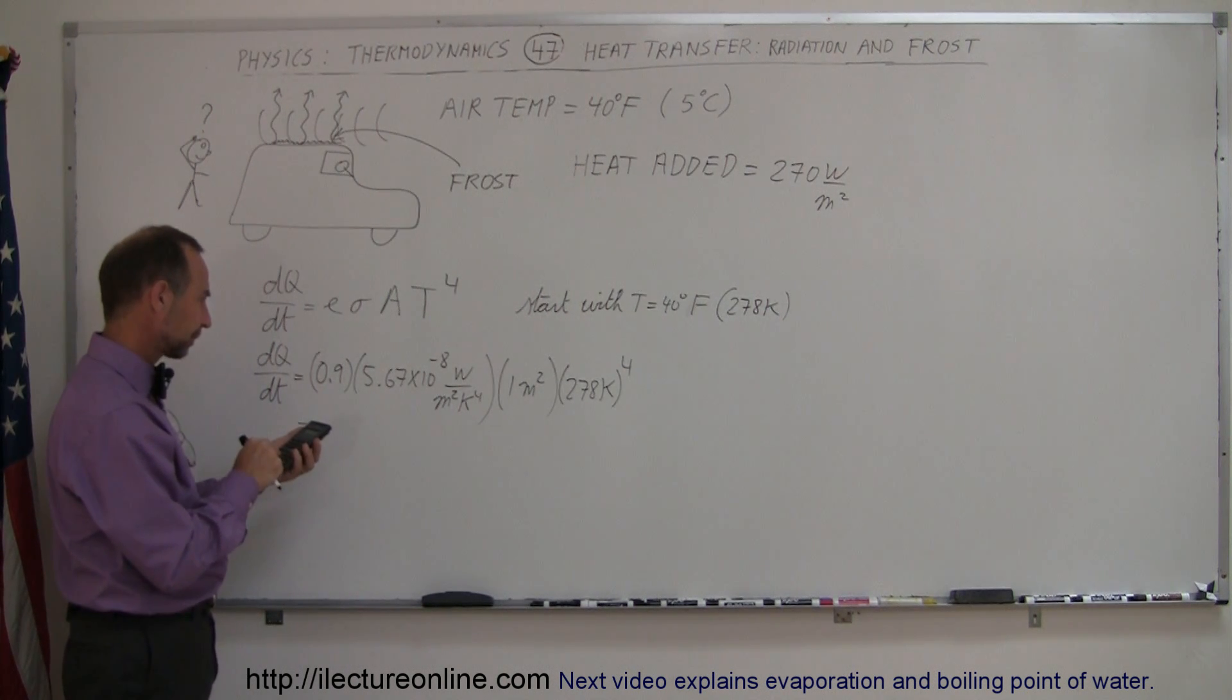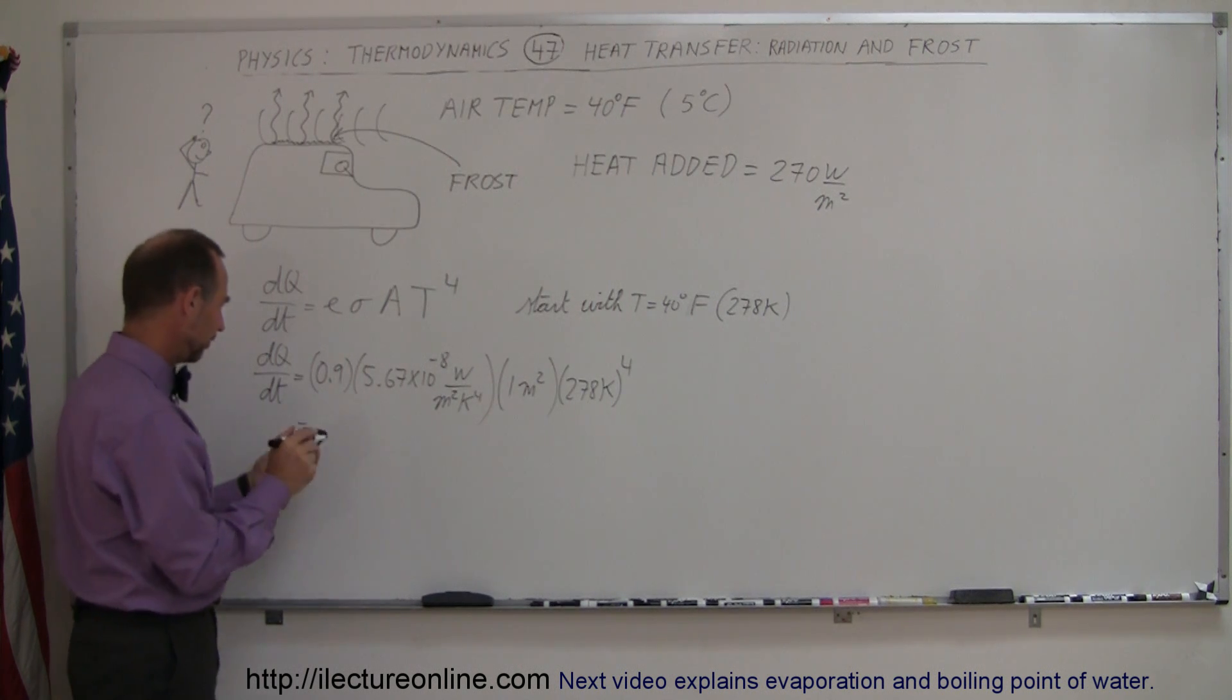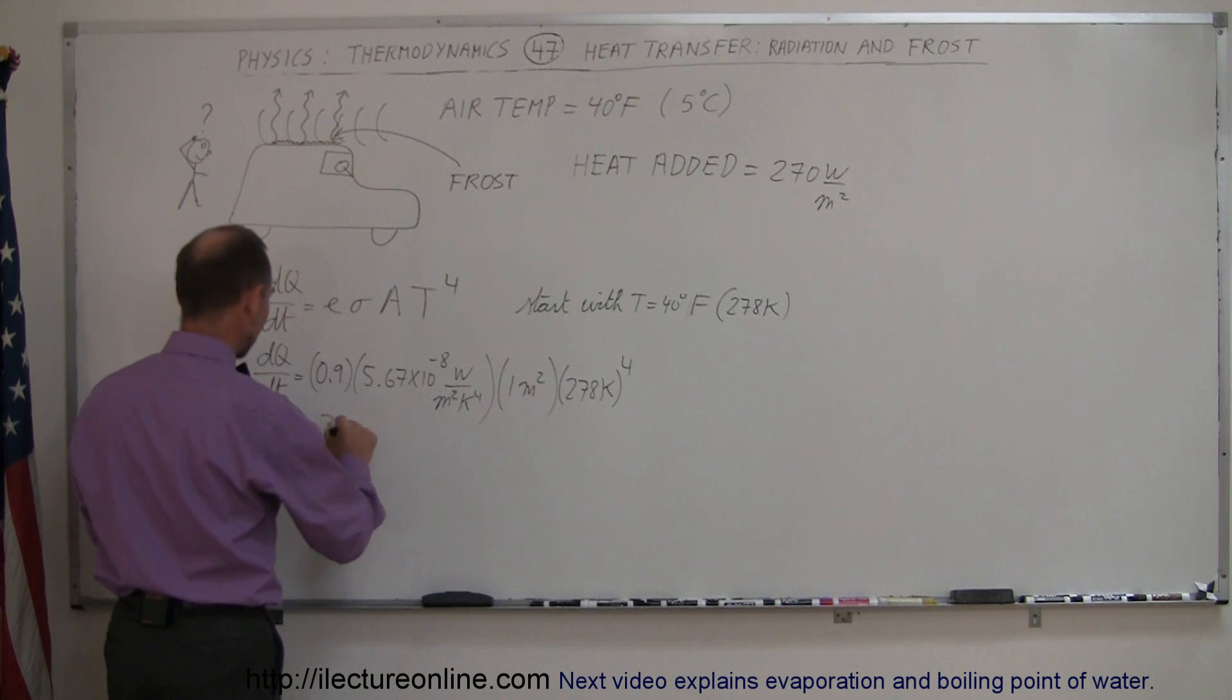We have 0.9 times 5.67 times 10 to the minus 8, times 1, times 278 to the fourth power, which equals about 305 watts per square meter.